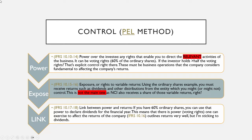These relevant activities are the business operations that the company considers fundamental to affecting their returns — that's power, per IFRS 10.10 to 18. Exposure means that if you're exposed to variable returns, the fluctuation of all the returns in the company — so if you receive dividends from a company, you're not going to get the same dividend every single year. This is the exposure to variable returns you might have as an investor.